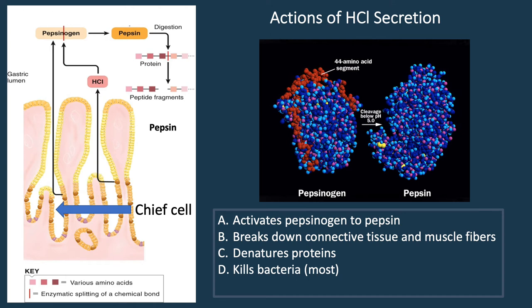The other actions of hydrochloric acid include breaking down connective tissue and muscle fibers, helping break large food particles into smaller ones. HCl also denatures proteins — uncoiling them from their folded form — exposing more peptide bonds for attack by enzymes like pepsin to break them into smaller fragments. Finally, HCl is very good at killing many bacteria, though some do go on to proliferate.